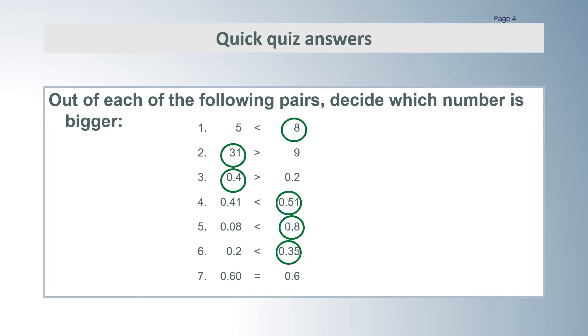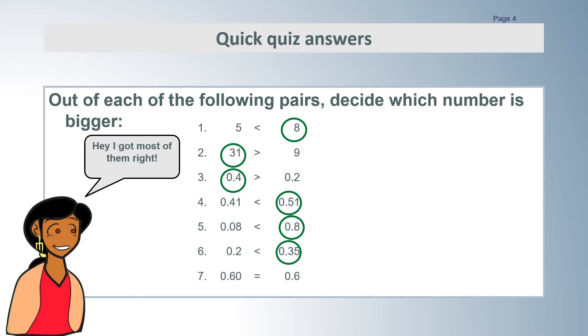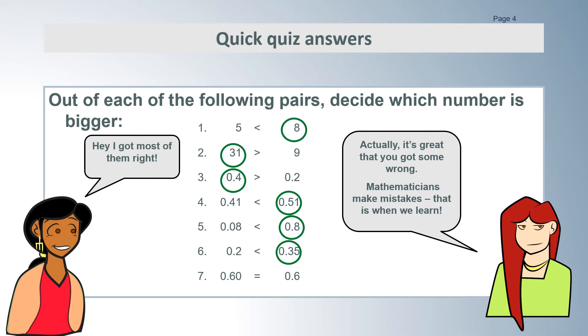Here are the answers. The larger numbers have been circled as well as having greater than or less than or equal signs. Don't worry if you got some wrong, the point is to get you thinking about them. In fact, getting some wrong is a really good sign that you're learning. We will now work through the questions one at a time.